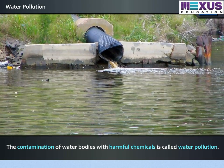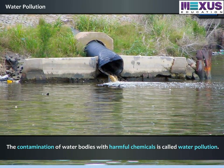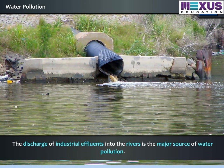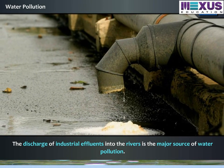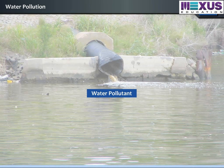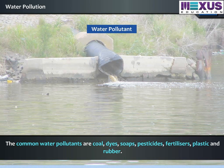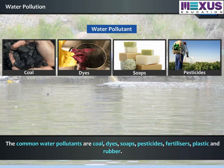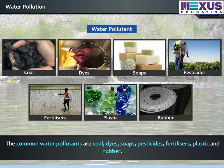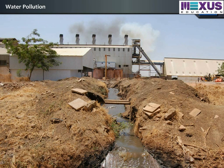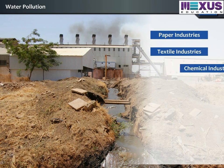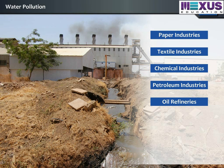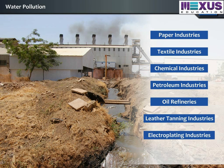The contamination of water bodies with harmful chemicals is called water pollution. The discharge of industrial effluents into rivers is the major source of water pollution. Water pollutants are both biotic and abiotic. The common water pollutants are coal, dyes, soaps, pesticides, fertilizers, plastic, and rubber. Major water polluting industries are paper, textile, chemical, petroleum, oil refinery, leather tanning, and electroplating industries.